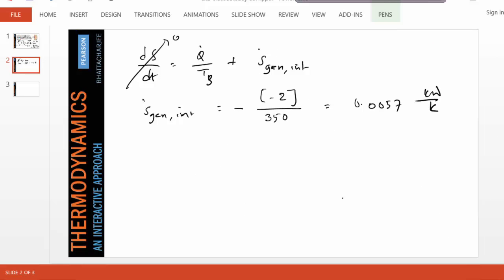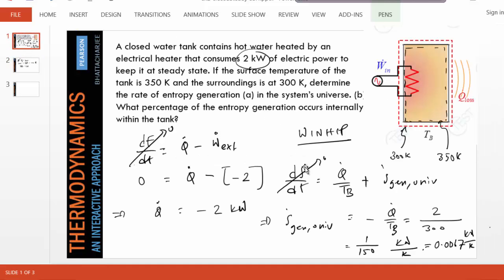So the percent that is created inside is simply 0.0057 divided by 0.0067, which is about 85 percent. The thermodynamic friction that takes place in the system - 85 percent of that is inside the tank and about 15 percent is outside the tank in the immediate surroundings area where the heat is lost.